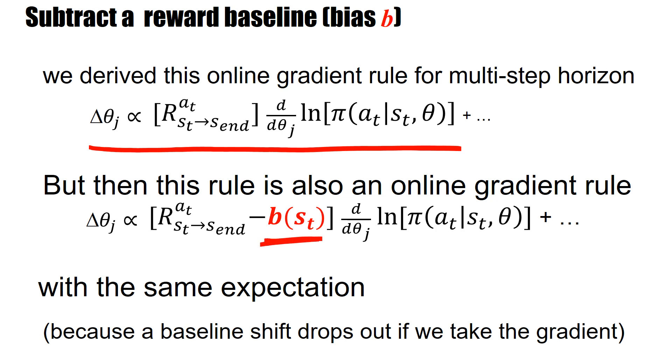The only difference is that we now subtract a baseline, and on average this will be the same expectation, because essentially whether we optimize the return or the return minus a baseline doesn't matter. It will give the same gradient. The baseline shift, the bias term B, will drop out once we take the gradient. Importantly, a bias doesn't have to be constant across all states. The bias itself may depend on the states.